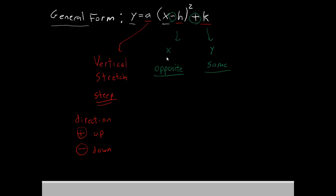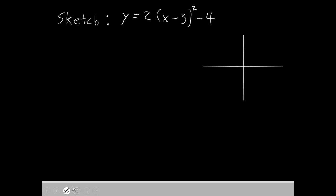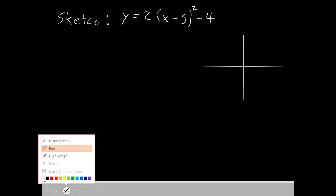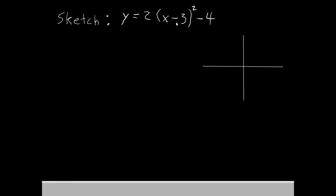Let's go ahead and do an example to make sense of this. So in our example, we're going to sketch the graph of y equals 2 times the quantity x minus 3 squared minus 4. I'm going to go ahead and label each of these: a, h, and k, so we remember what each of them are.